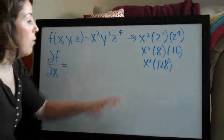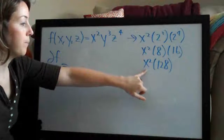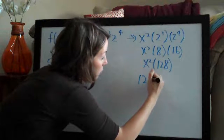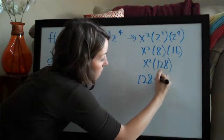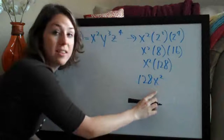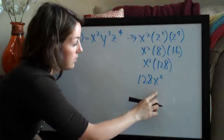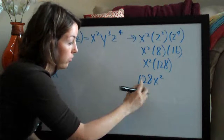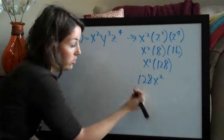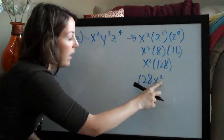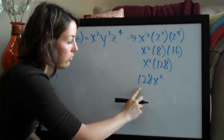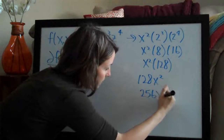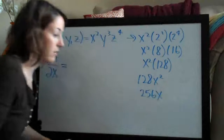So if we were taking the derivative of this normally, we would be looking at 128x squared. We would take the derivative and multiply 2 times the coefficient, which is 128, so that would be 256 — the derivative of this would be 256x.